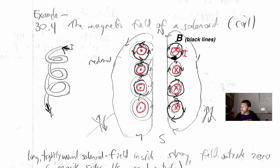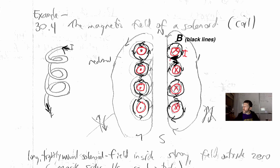There are a couple of things to notice here. In between the coils, the magnetic field due to one coil is pointed to the left, and the magnetic field due to the adjacent coil is pointed to the right — they are equidistant from both coils. So the magnetic field at that point right in between is zero by superposition.